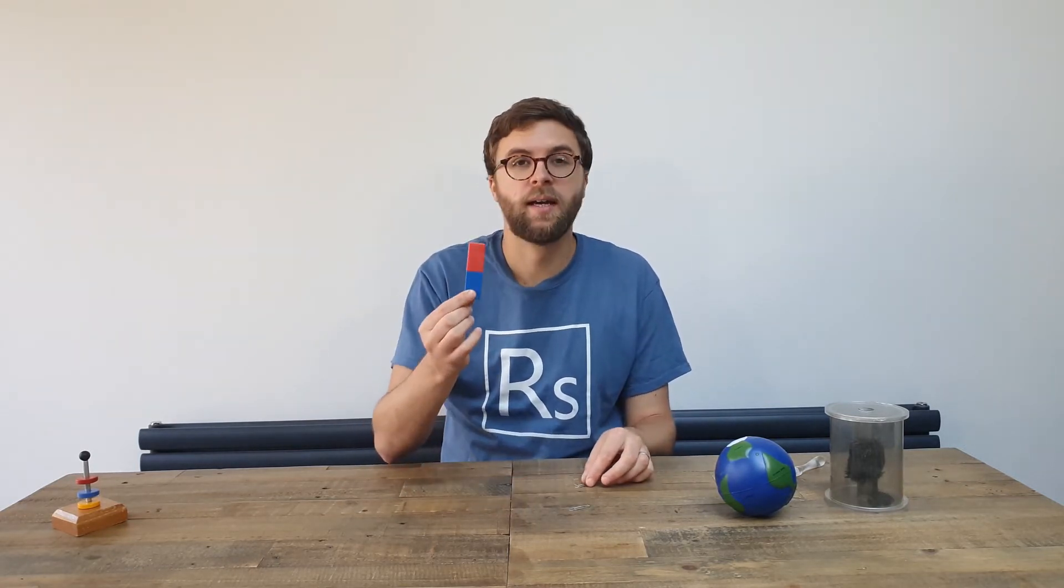Now there are two types of magnets. Permanent magnets like this produce their own field and are generally made of steel.